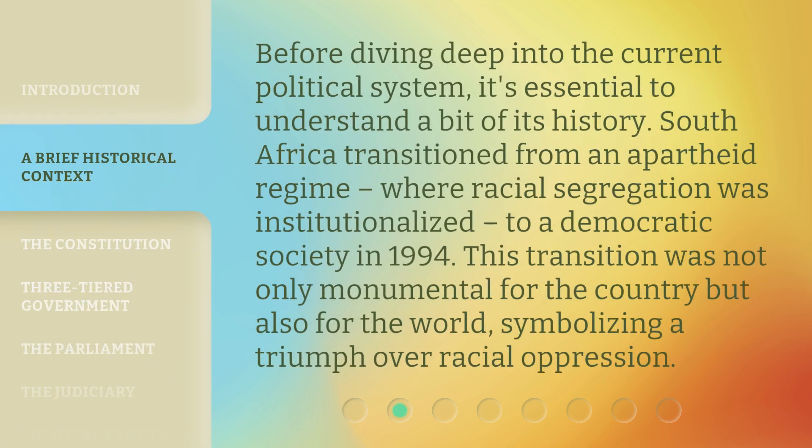Before diving deep into the current political system, it's essential to understand a bit of its history. South Africa transitioned from an apartheid regime, where racial segregation was institutionalized, to a democratic society in 1994. This transition was not only monumental for the country but also for the world, symbolizing a triumph over racial oppression.